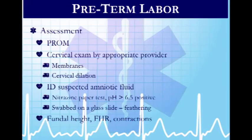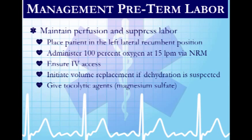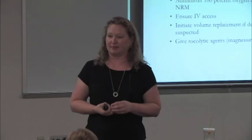Goals for preterm labor management: perfuse the infant as best as possible. Hydrate mom, give 100% oxygen, and volume replacement if dehydration is suspected. Tocolytics are medications used to stop or cease contractions. Magnesium sulfate is the most common — it works as a smooth muscle relaxer to hopefully relax the uterus and stop preterm contractions.